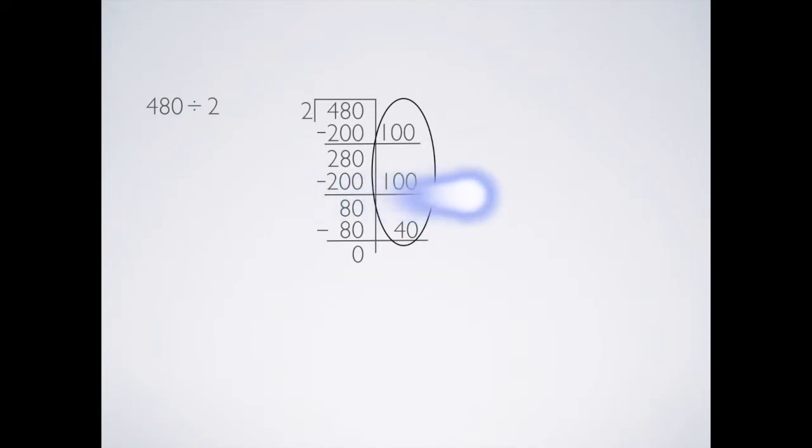Look at the groups on the right of the hangman's pole. These are how many groups of 2 there are in 480. Add the groups together and we get an answer of 240. That means there are 240 groups of 2 in 480.